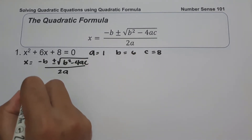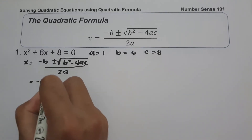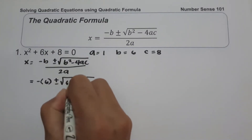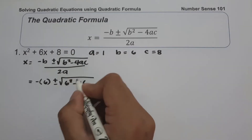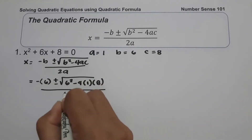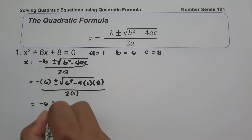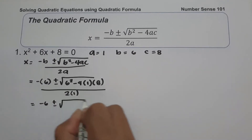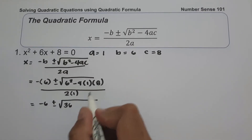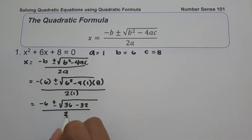Let us substitute the values of a, b, and c. So we have negative b, that is 6, plus or minus b squared — so 6 squared — minus 4 times a, that is 1, times c, that is 8, all over 2 times a, that's 1. So we have negative 6 plus or minus; 6 squared is 36. Negative 4 times 1 is negative 4 times 8, that's negative 32. And 2 multiplied by 1, that is 2.